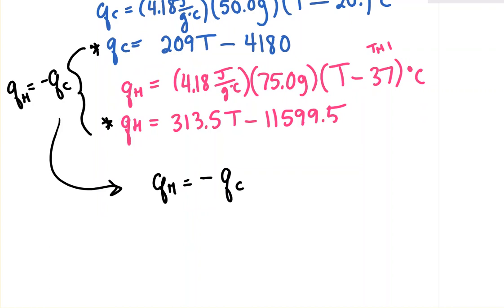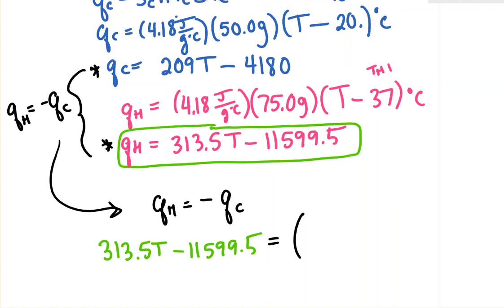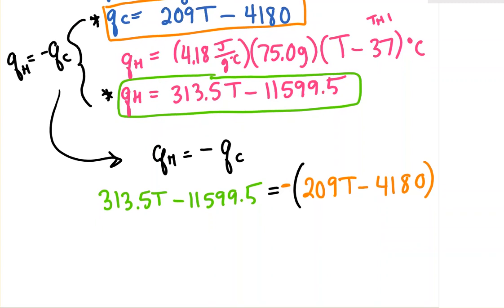I'm going to plug in. I'll take this expression for q_H and plug it in here. For q_C, I'll take that expression and put it here. Don't want to lose that negative sign. So 313.5T minus 11599.5 equals negative times 209T minus 4180. From there, it's just algebra.